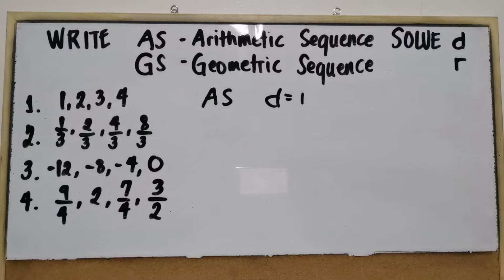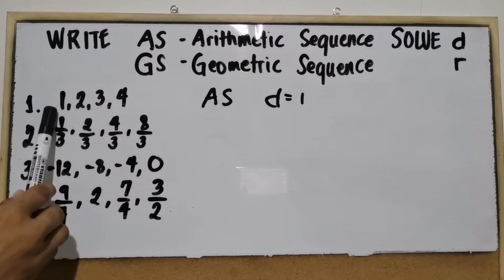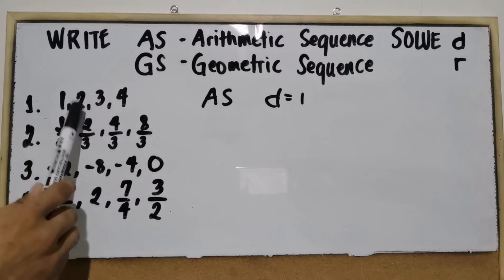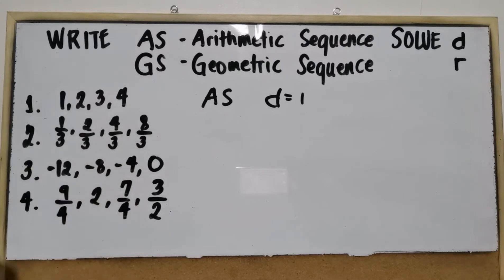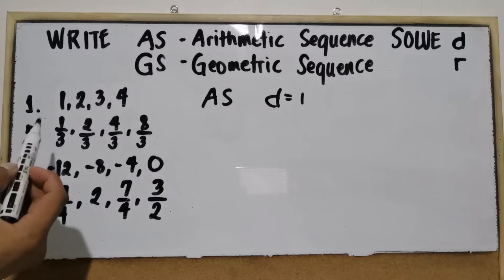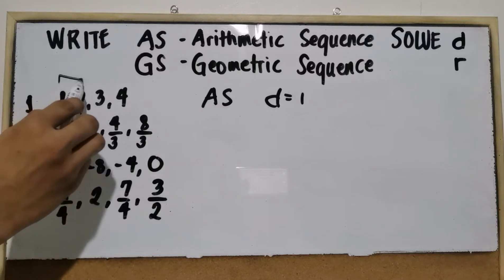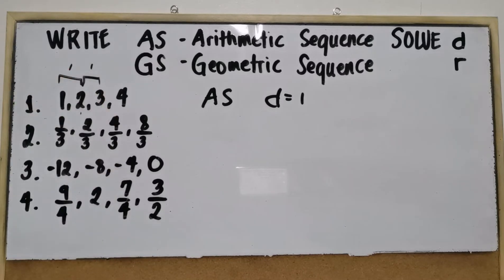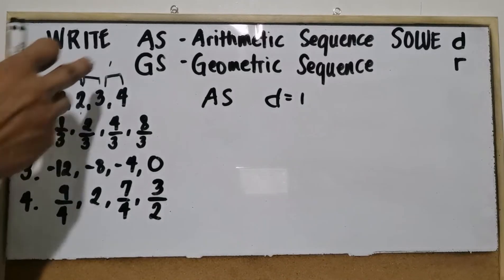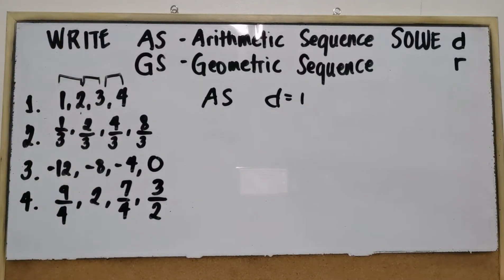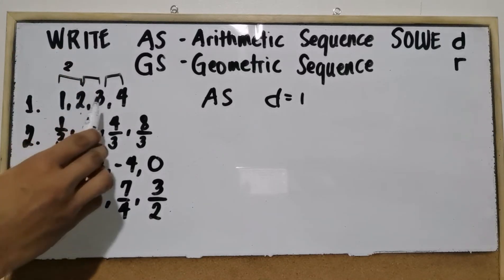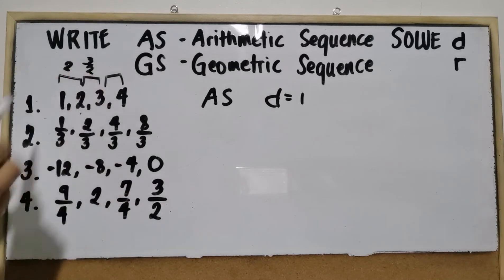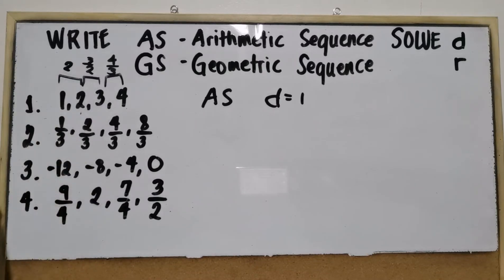To solve for the common difference, subtract the second term from the first. For the common ratio, divide the second term by the first — and that ratio should be equal across all terms. Number 1: the sequence is 1, 2, 3, 4. Subtracting gives a common difference of 1 each time. When we try division: 2÷1=2, 3÷2=1.5, 4÷3≈1.33 — no common ratio. So it is an arithmetic sequence with common difference 1.